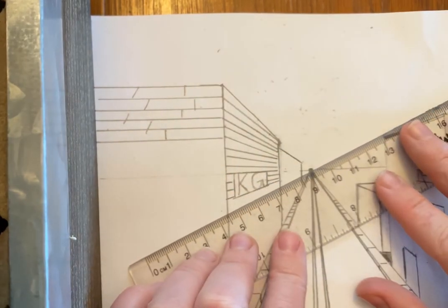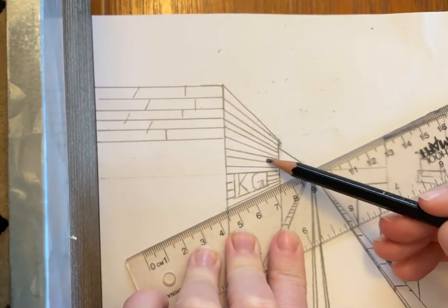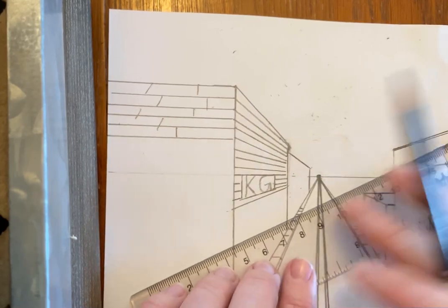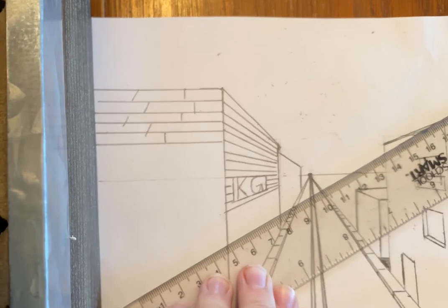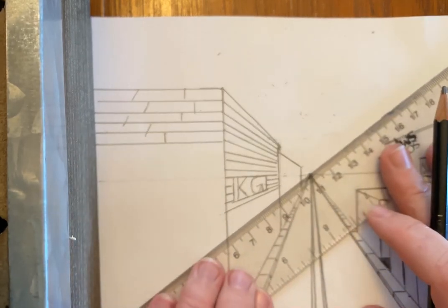See how I'm still touching the vanishing point? Oftentimes people will start out touching the vanishing point and then when they get down here they start drawing straight lines that aren't connecting. Like this line which I have set up right now would be wrong because it's not touching the point.